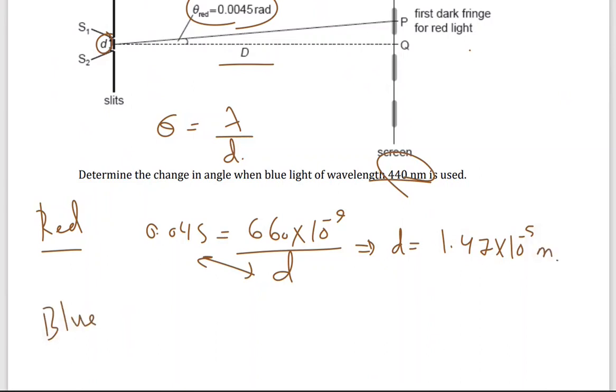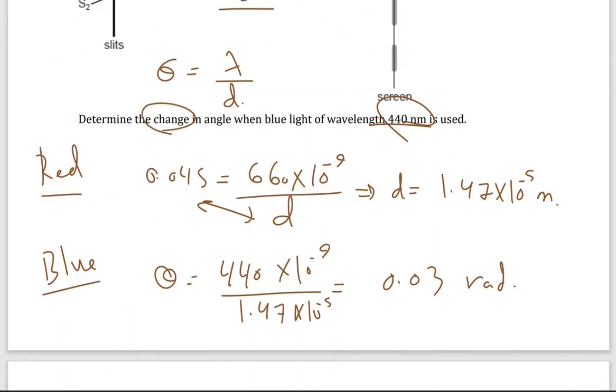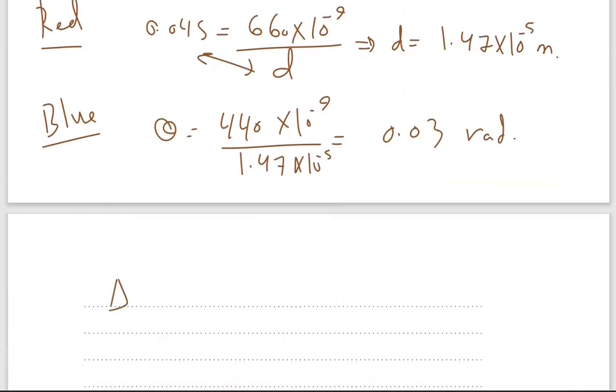Now for blue, the angle theta is lambda 440 times 10 to the power negative 9, divided by d, we've just got d, is 1.47 times 10 to the power negative 5, so the angle theta is 0.03. So changing the angle, determine the change in the angle, the word change, it means difference, so the change in the angle will equal 0.0045 minus 0.03, should be 0.015.